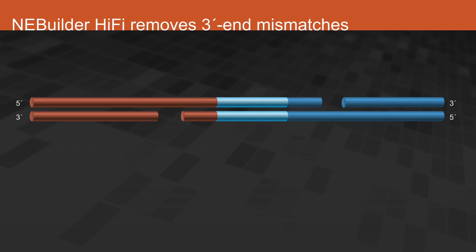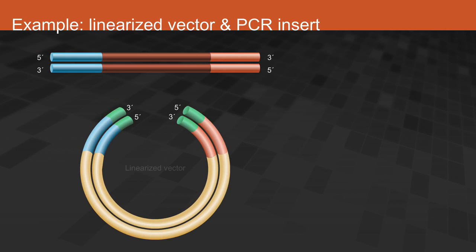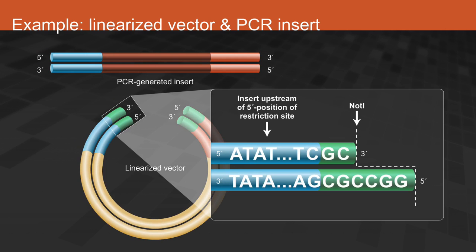In this example, we want to join a linearized vector and an insert at the 5' position of this restriction site.